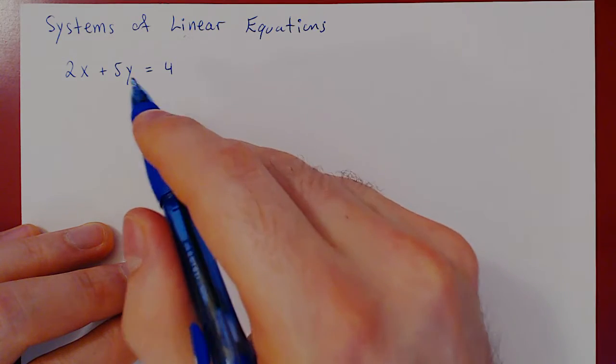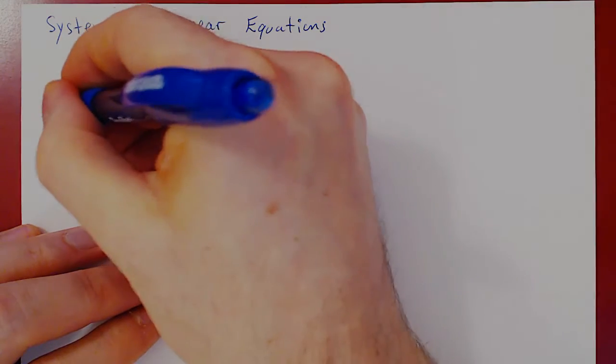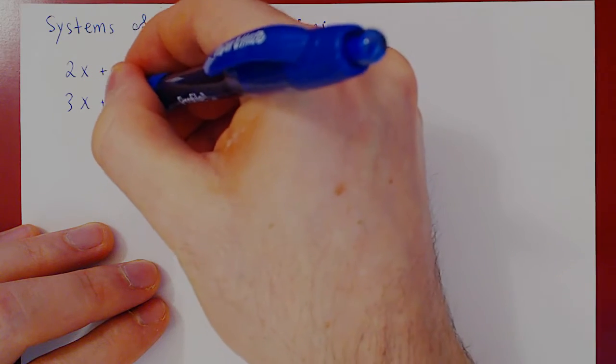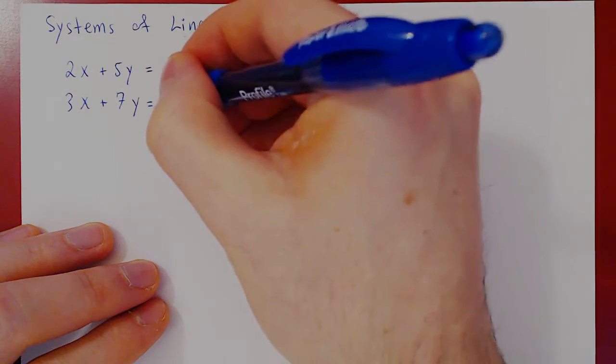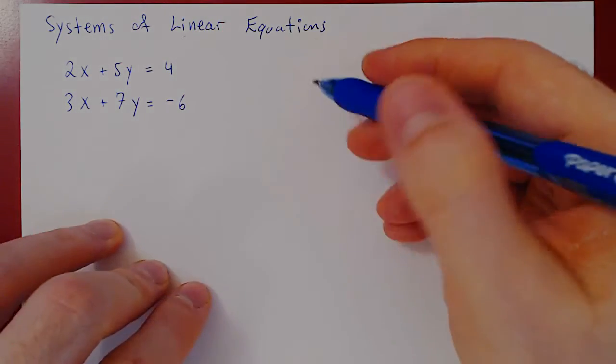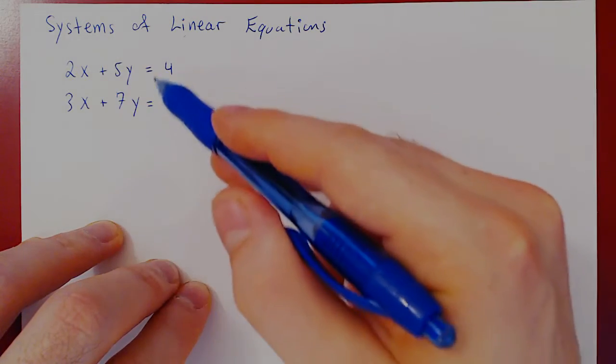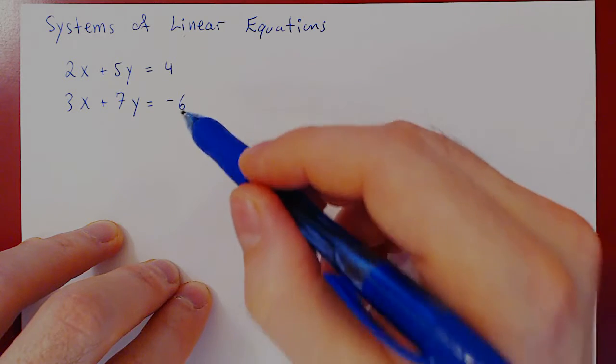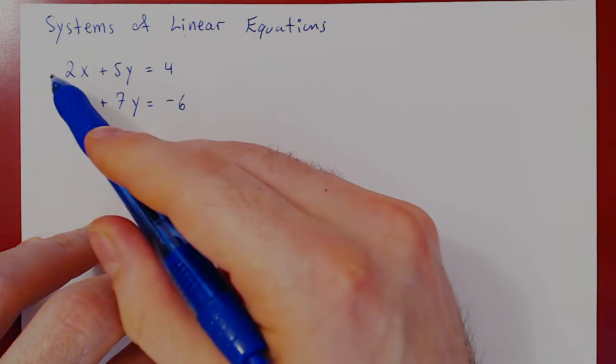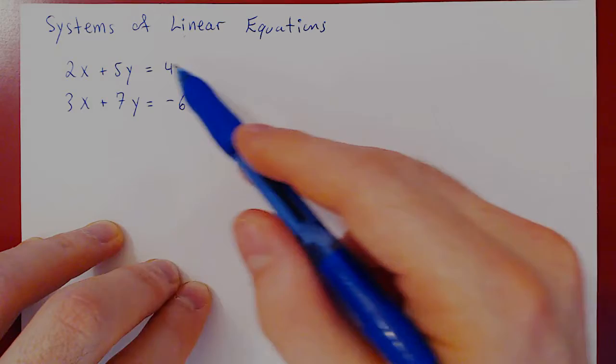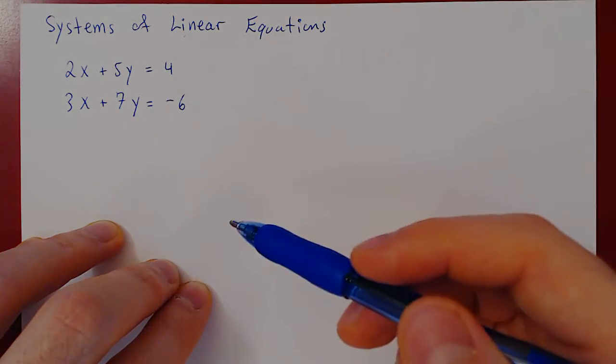But at the same time, simultaneously, the other equation, 3x plus 7y equals negative 6. So when you're asked to find a solution to this so-called system of linear equations, you're asking to find a value of x and a value of y that satisfy simultaneously the first and the second equation.